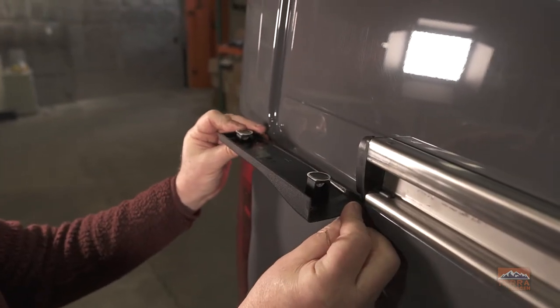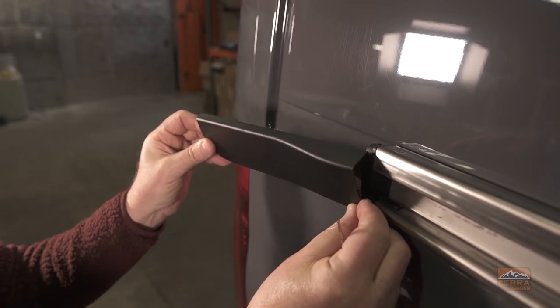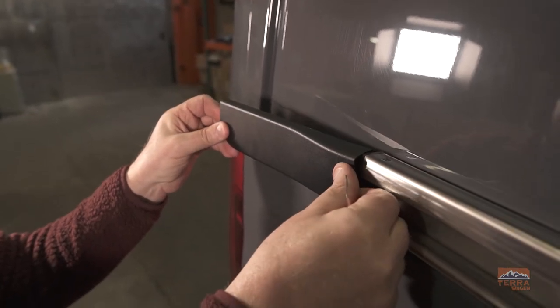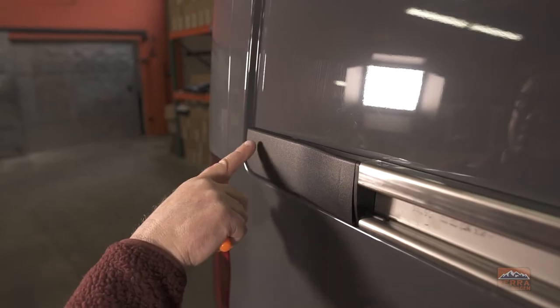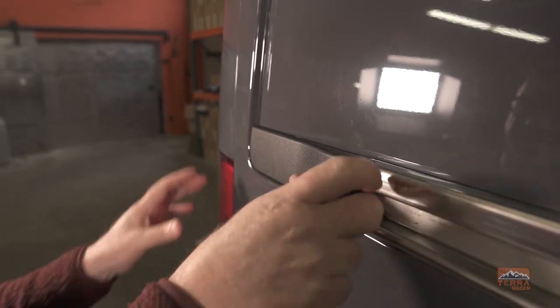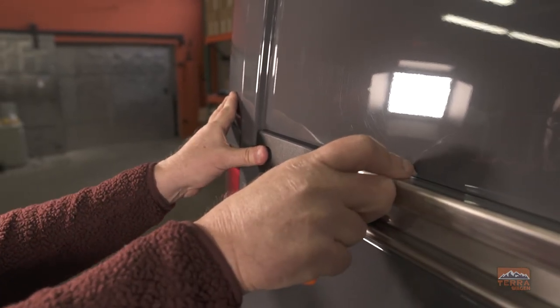Now we're going to line up the door trim with the end cap clip and just slide it right in. And then apply pressure to both of the adhesive tabs to adhere the piece to the van.